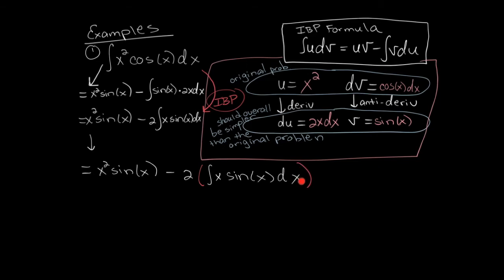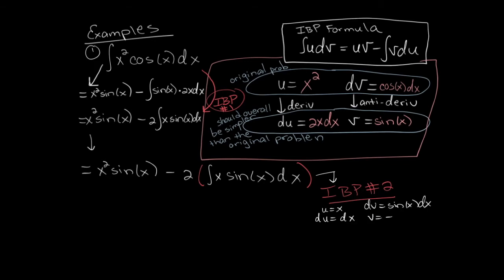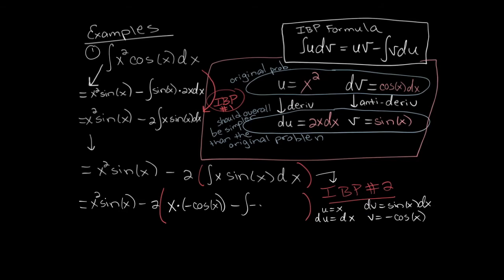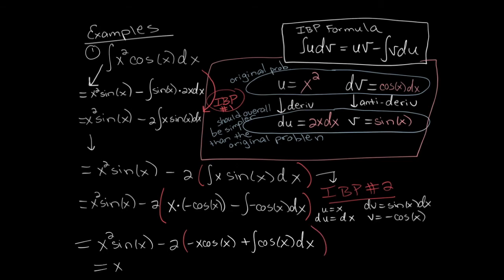Our problem has reduced to the antiderivative of x times sine. We're going to do integration by parts again. This time u equals x, so du equals 1 times dx, and dv equals sine x dx, so v equals negative cosine. Inside the red parentheses we execute our second integration by parts formula: u times v is x times negative cosine, minus the integral of v times du, which is negative cosine times dx. The antiderivative of negative cosine is negative sine, and taking the antiderivative of cosine gives sine — don't forget to add plus c.